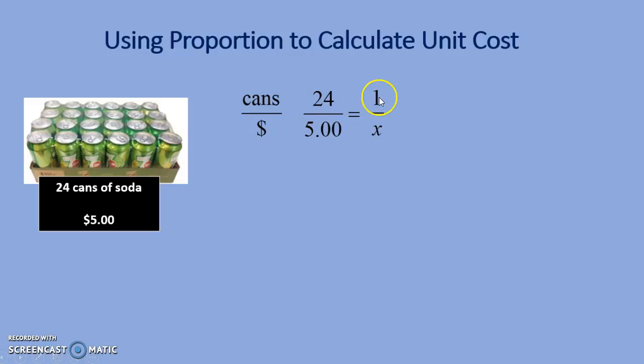When you've set up the correct proportion, it is easy to solve for X. Cross multiply.